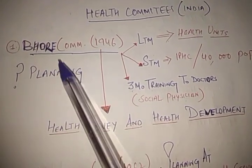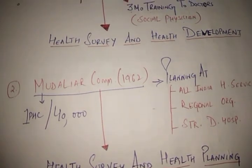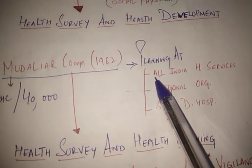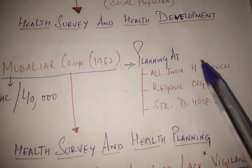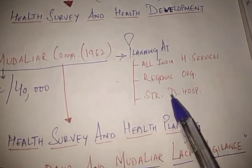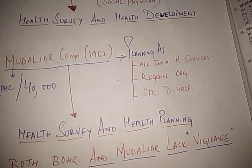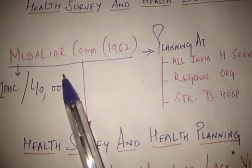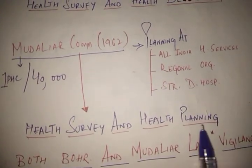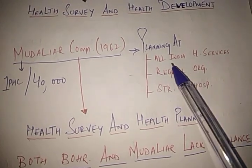To overcome that drawback, the more advanced Mudaliar Committee came in 1962. It did planning to strengthen the services at the national level, where it created the constitution of All India Health Services. It also created regional organizations at the state level to strengthen health services and strengthened district hospitals with specialized services. It also recommended one PHC for 40,000 population. The Mudaliar Committee is also called the Committee on Health Survey and Health Planning.